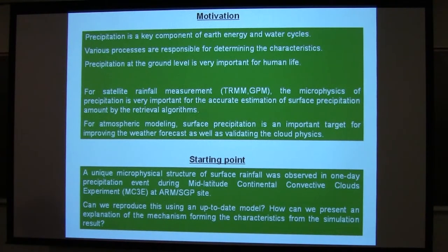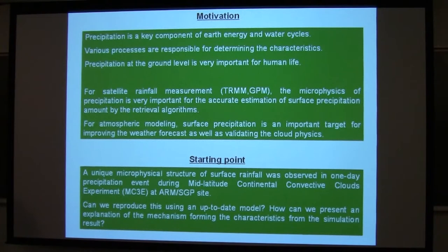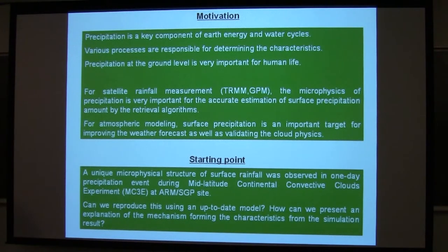Some assumption of precipitation microphysics is needed in the calculation of algorithms to connect the measured signals to the result of the algorithms, such as surface precipitation amount. For atmospheric modeling, surface precipitation is also an important target for improving short-term weather forecasting, as well as validating cloud physics. It is also related to cloud radiative properties and interaction with dynamics.